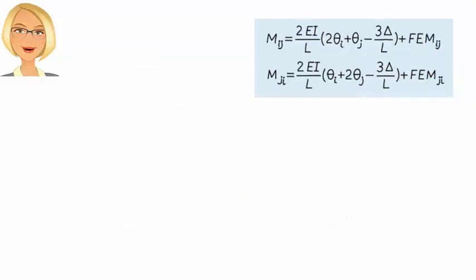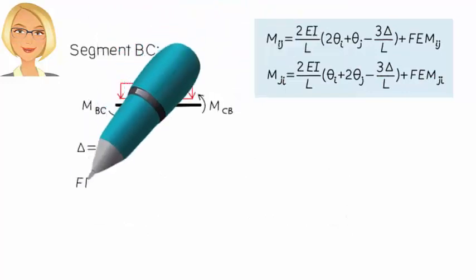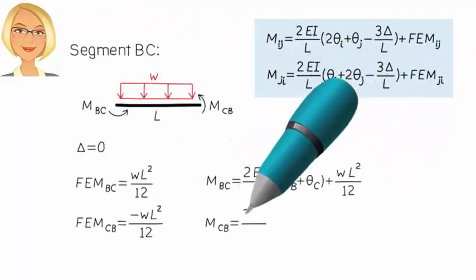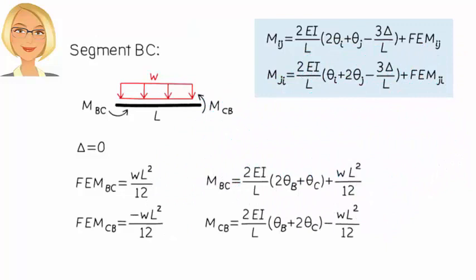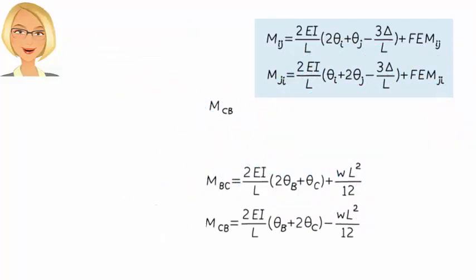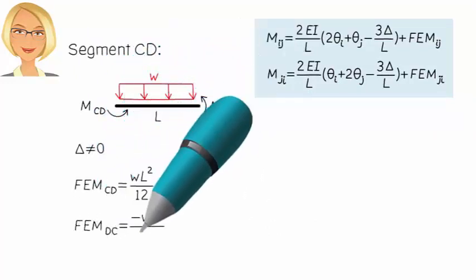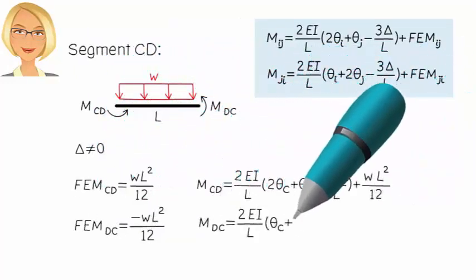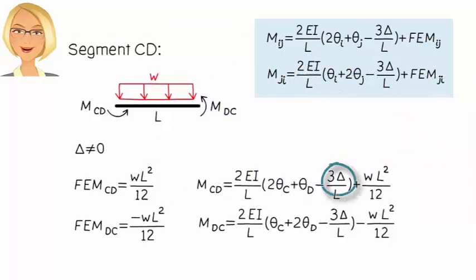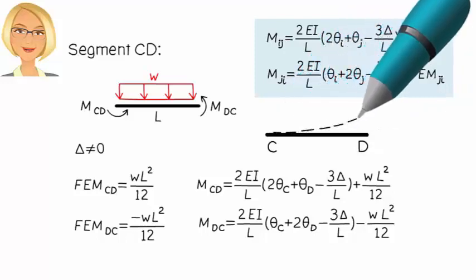Similar to AB, for segment BC, we get the corresponding equations. And for segment CD, we have the equations shown here. Note the non-zero delta in these slope deflection equations. It is important to note the direction of the delta here. It is assumed to be caused by a counterclockwise rotation of the member. This means delta is assumed to be upward at D, like this.